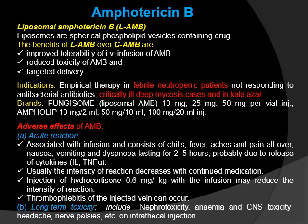Usually the intensity of reaction decreases with continued medication. Injection of hydrocortisone 0.6 mg per kg with the infusion may reduce the intensity of reaction. Thrombophlebitis of the injected vein can occur. Long-term toxicity includes nephrotoxicity, anemia, and CNS toxicity.